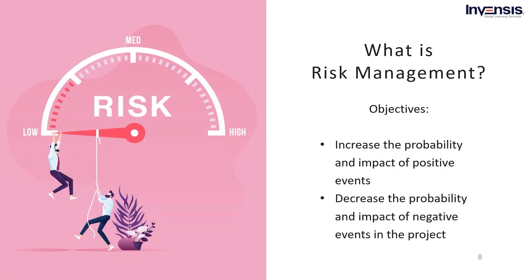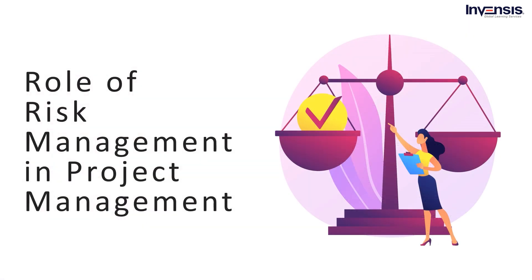The main objective of risk management is to create a positive impact on events. In summary, project risk management aims to identify and prioritize risks in advance of their occurrence and provide action-oriented information to project managers and other important stakeholders. This requires consideration of possible events described in terms of probability of occurrence.